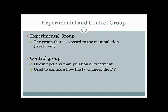What the control group does is help us rule out things like — for the depression example — people just getting better over time on their own, or for the self-esteem promotion example, kids just gaining more self-esteem as they grow older regardless of what you do. Because the control group doesn't get any manipulation, we can say that anything different we notice in the experimental group must be due to the manipulation. The question that comes up is: how do you break your sample into an experimental and control group? How do you decide who gets the treatment versus who gets the control?